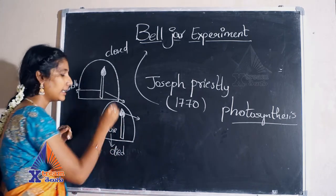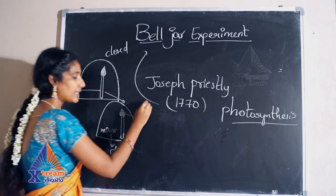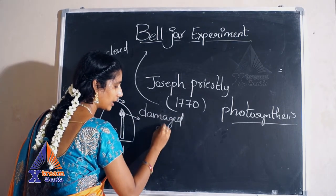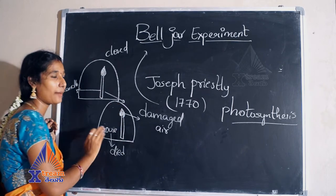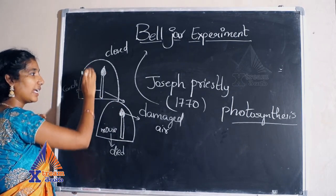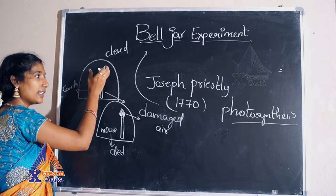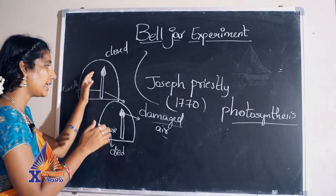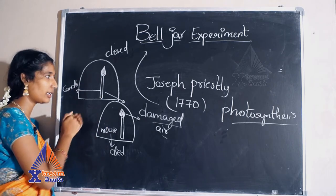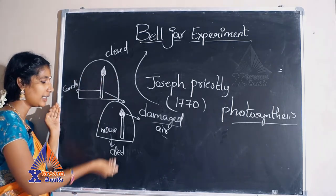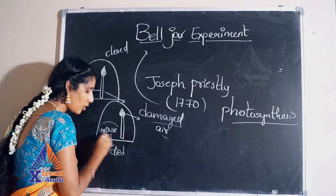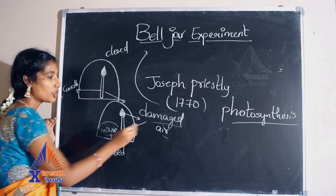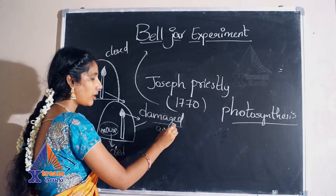So he started thinking that something is happening in the bell jar. What he noticed is there is a damaged air in the bell jar. After sometime, whatever air is present is used up by the candle, and so the candle is not getting lighted. The same way, the mouse is also not getting oxygen — because it is closed, the damaged air is present.